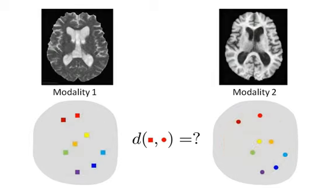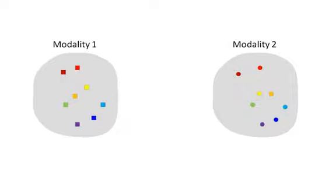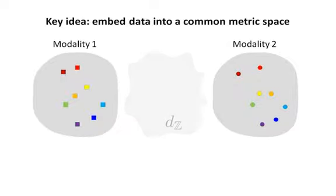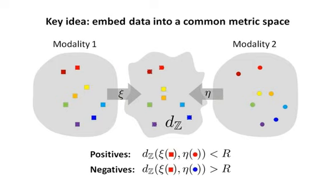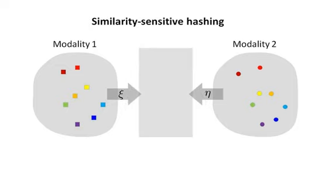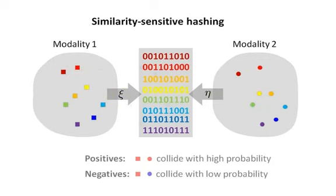The key idea of the proposed approach is to embed incommensurable data into a common metric space in such a way that positive pairs are mapped to nearby points, while negative pairs are mapped to faraway points in the embedding space. In particular, we use embedding into the Hamming space. The obtained hash function is similarity sensitive. Positive pairs are likely to collide, while negative pairs have low collision probability.